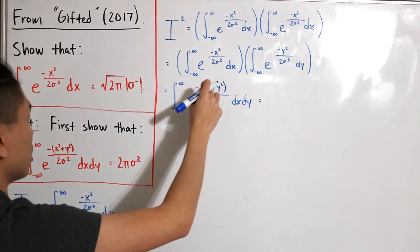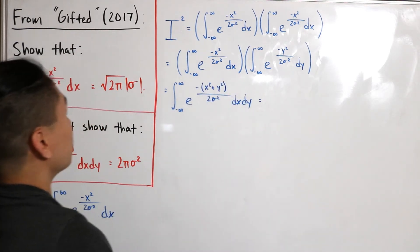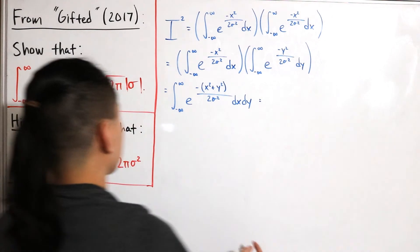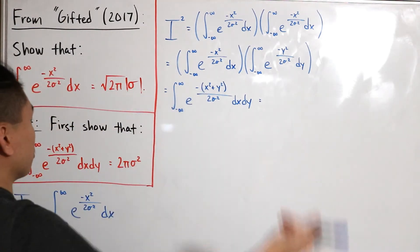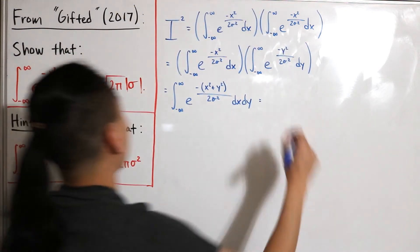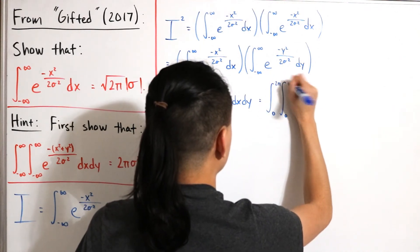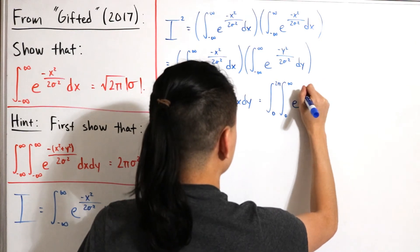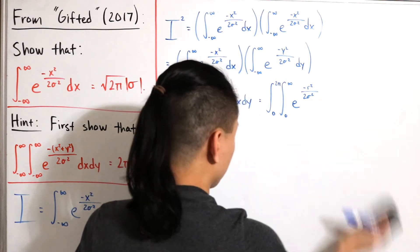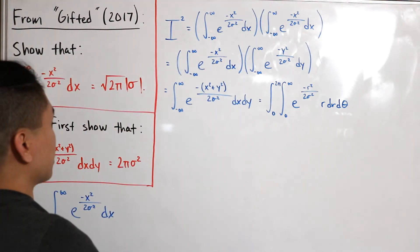Now we apply polar coordinates: replace x-squared plus y-squared with r-squared, and replace the differential using the Jacobian, so dx dy becomes r dr dθ. The bounds also change: for the full plane in polar coordinates, r goes from 0 to infinity and θ goes from 0 to 2π. So the double integral becomes the integral from 0 to 2π and 0 to infinity of e to the negative r-squared over two sigma-squared, multiplied by r, dr dθ.